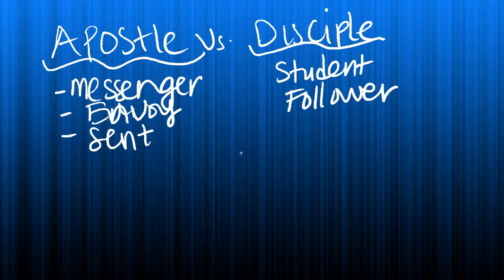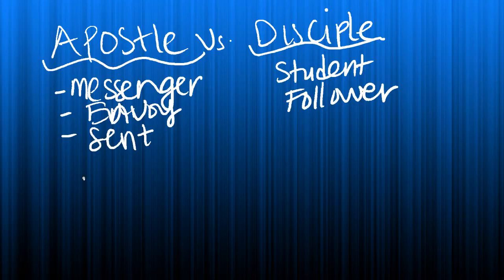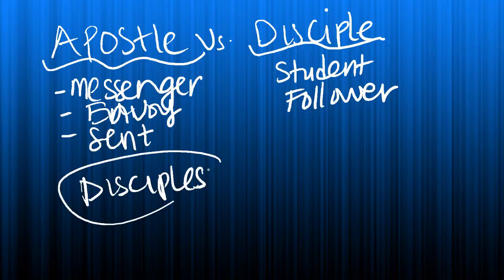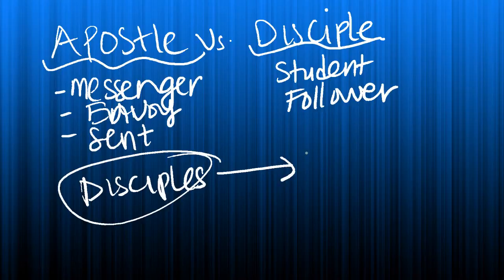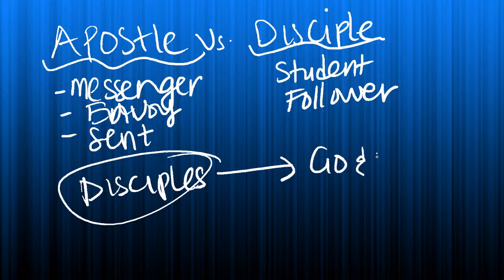Now let's take the 12 disciples of Jesus and perhaps the other disciples. We see that they first became disciples of Jesus. They first became disciples, and then when Jesus died on the cross and rose again, and upon his departure from the earth, in Matthew 28 verse 18 to 20, we see Jesus give them the command to go and make disciples.